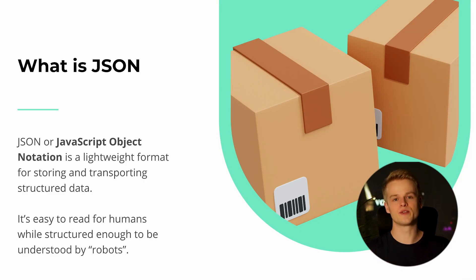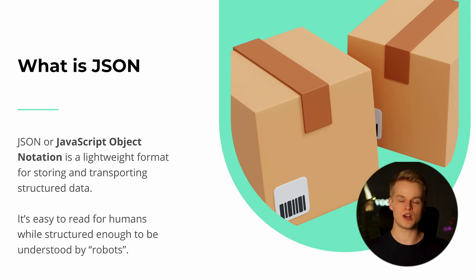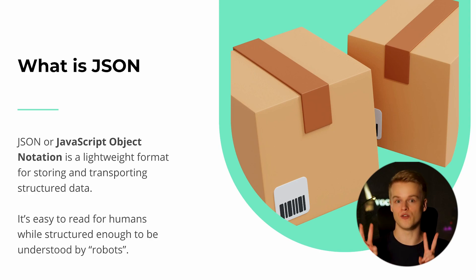I'd like to explain what a JSON construct actually is. In the end, it is just a structured way of packing data into something to make it understandable for what we call robots. In our example, robots is a broad term — it can be servers, automation tools, internal tools, or testing software. There are plenty of things you can use to automate, but we just call them robots to keep things simple.